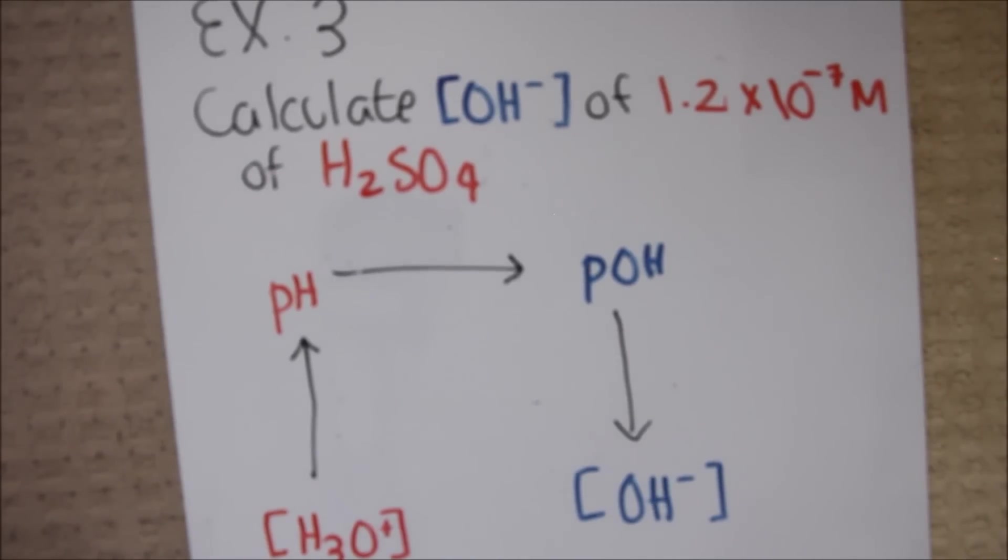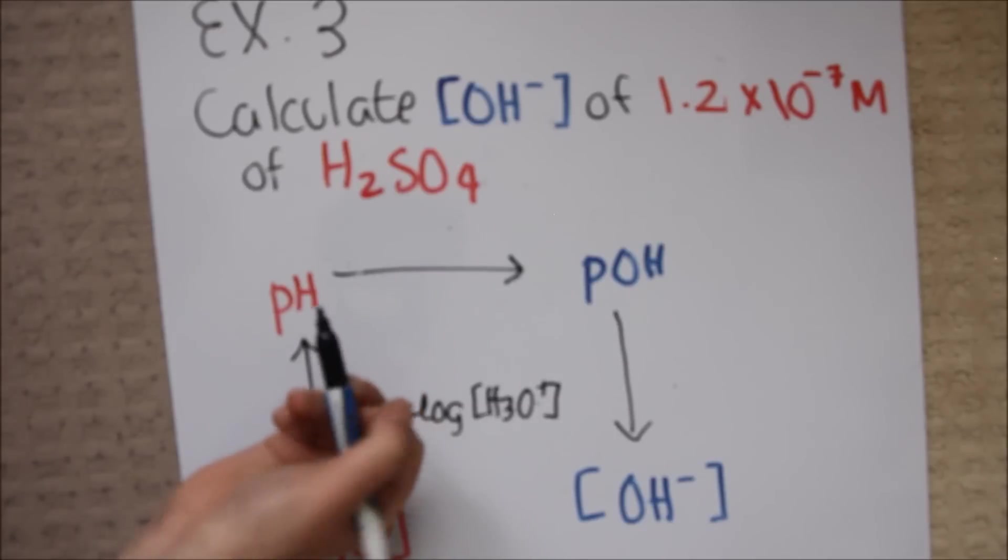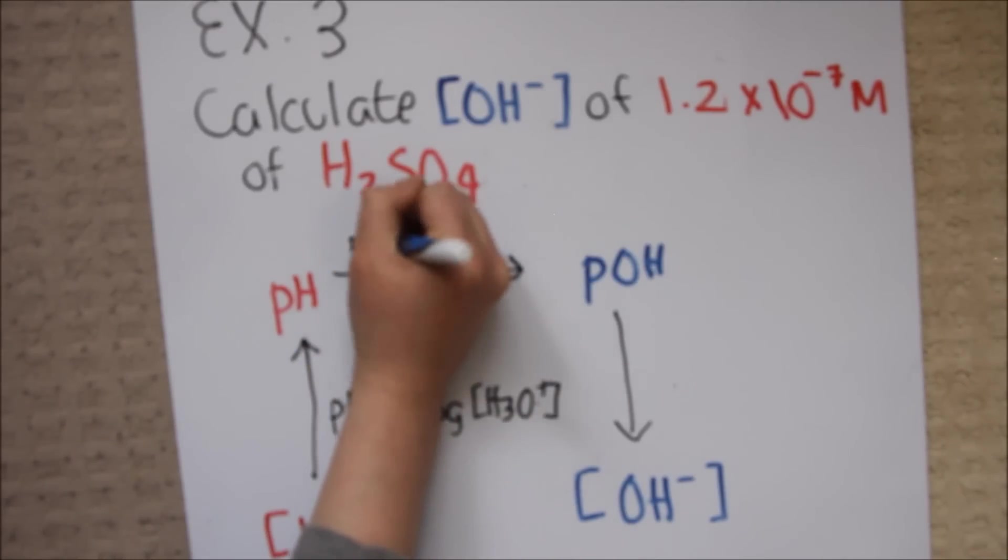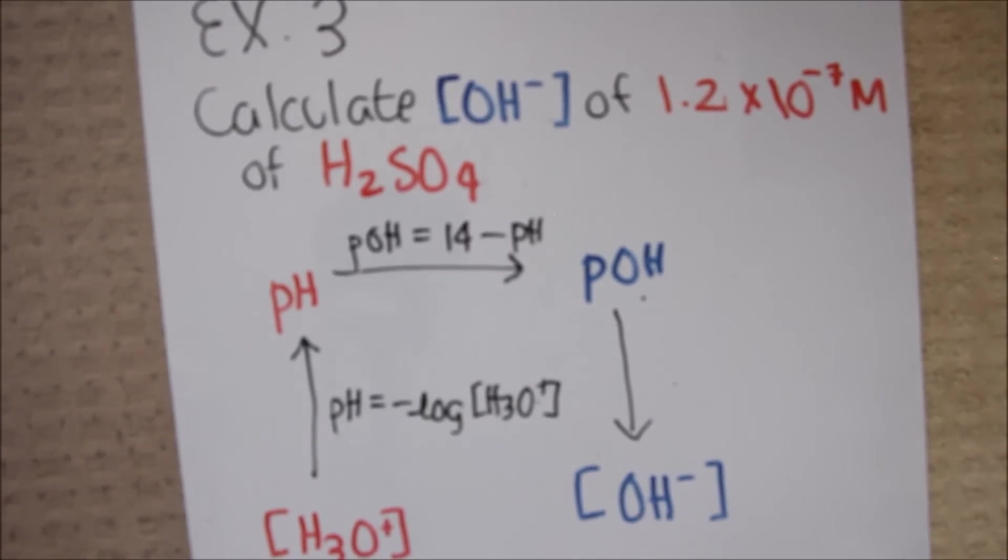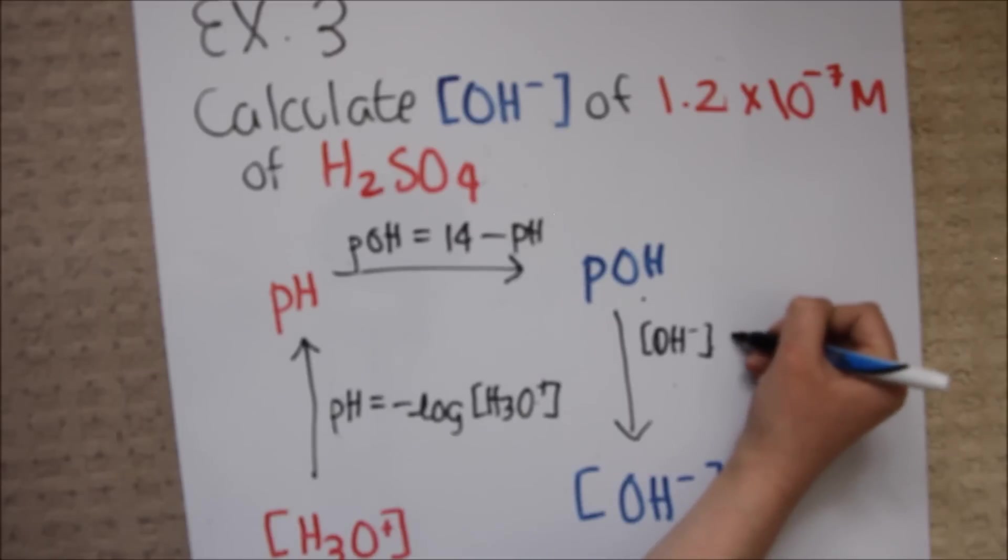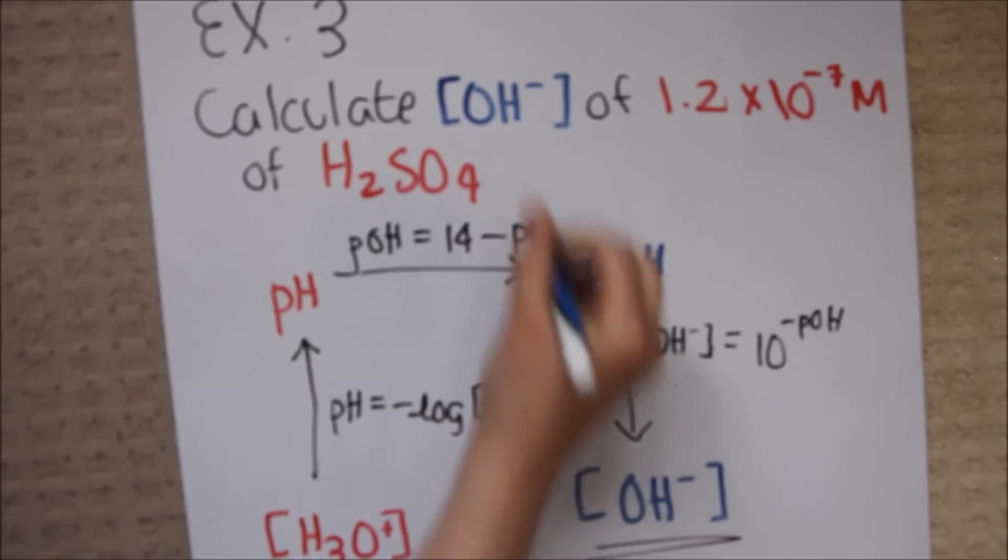Example 3. Calculate the hydroxide ion concentration of 1.2 times 10 to the negative 7 moles per liter of sulfuric acid. This is most definitely the most challenging problem we've looked at so far because it requires us to go from hydronium concentration using the formula pH equals negative log H3O+ to pH. From pH, we need to use the formula pOH equals 14 minus pH to get us to pOH. From pOH, we need to use the formula OH- equals 10 to the negative pOH to get us to OH-, which is our end goal.